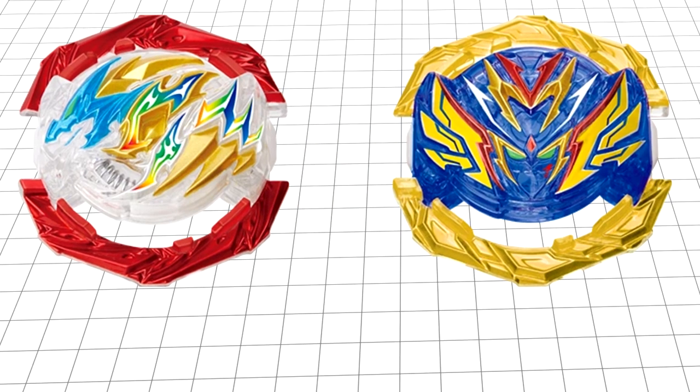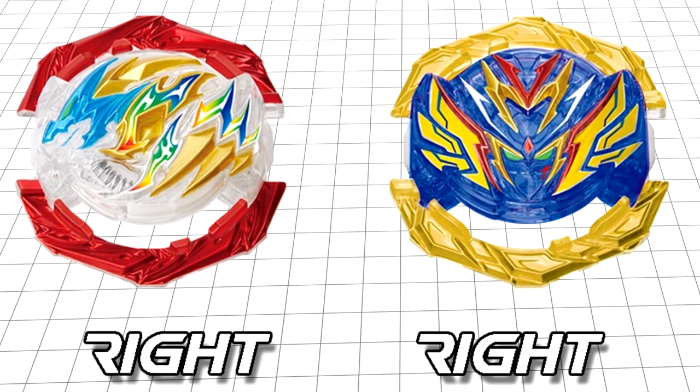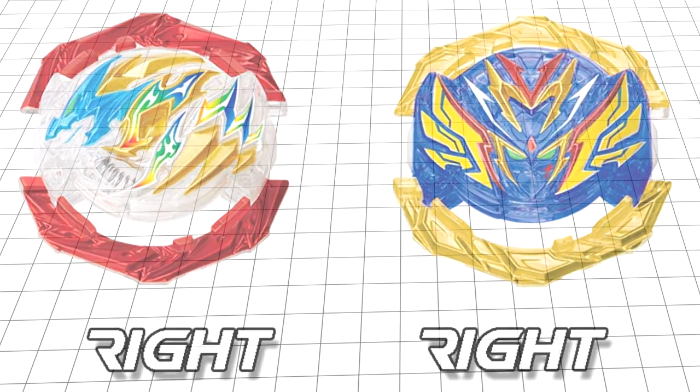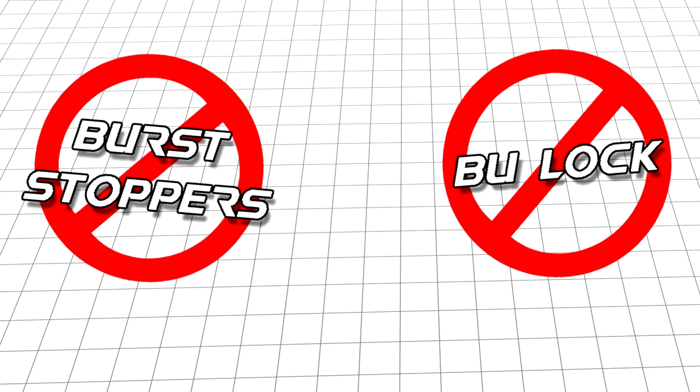Dragon and Valkyrie 1 are a different case though. They are both right spin cores and have teeth as usual, so what makes them different? They don't have any kind of burst stoppers or BU lock, but they do have something else interesting.